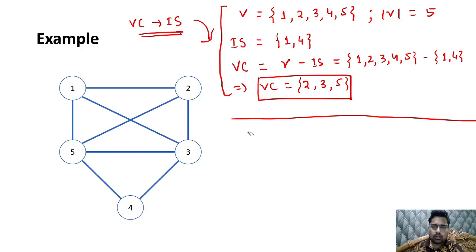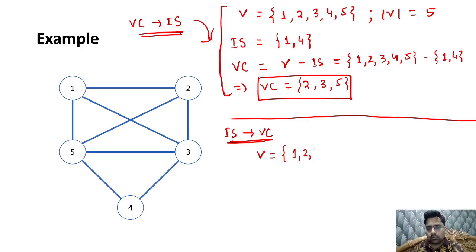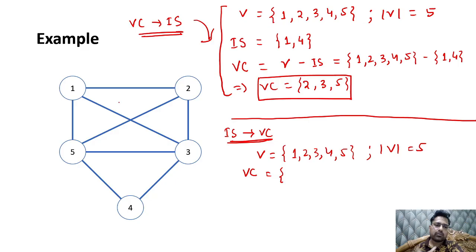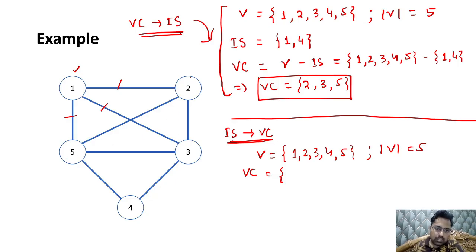Next, using vertex cover we are finding the independent set — the same example we are taking. The number of nodes is 5. We have 5 vertices and want to find the vertex cover. If you keep node 1 as a vertex cover, it will cover those immediate edges. If you are taking node 2, it will cover certain edges. If you want to take 4, it will cover this edge and this edge, but what about the remaining edge?